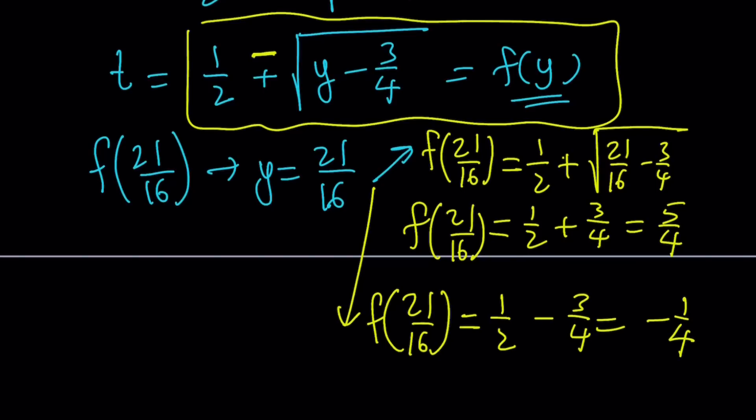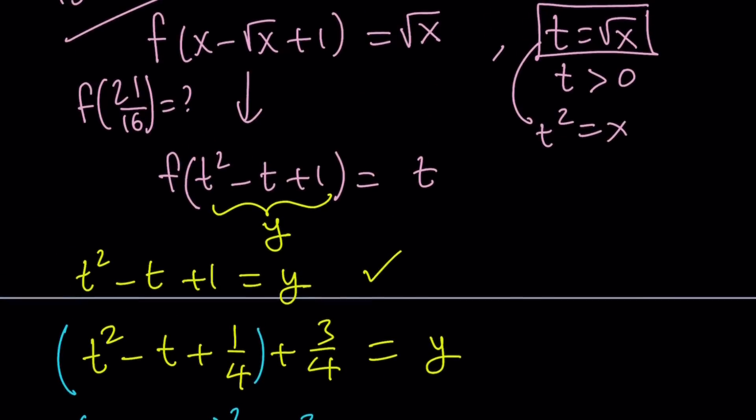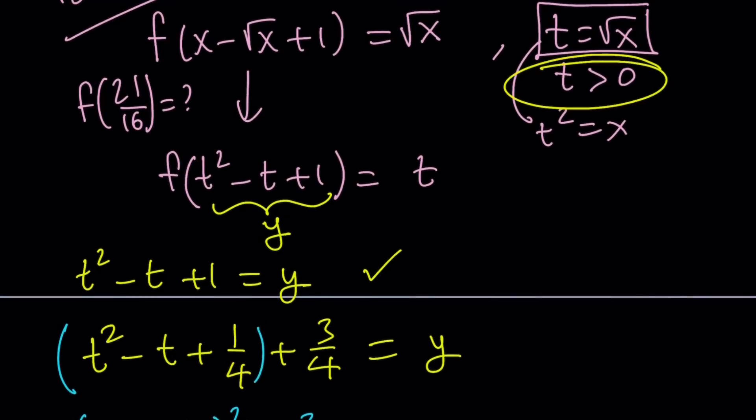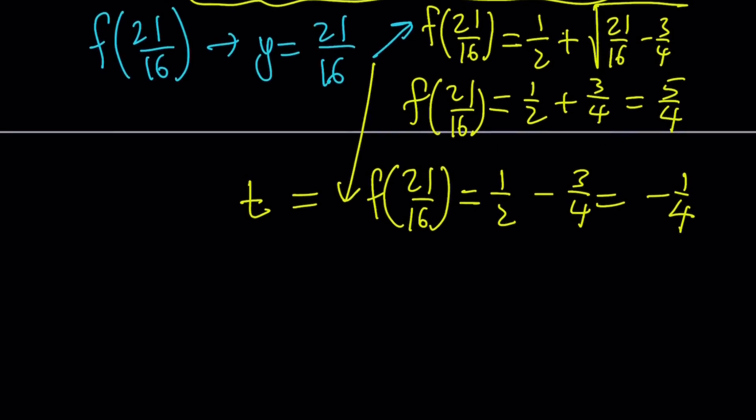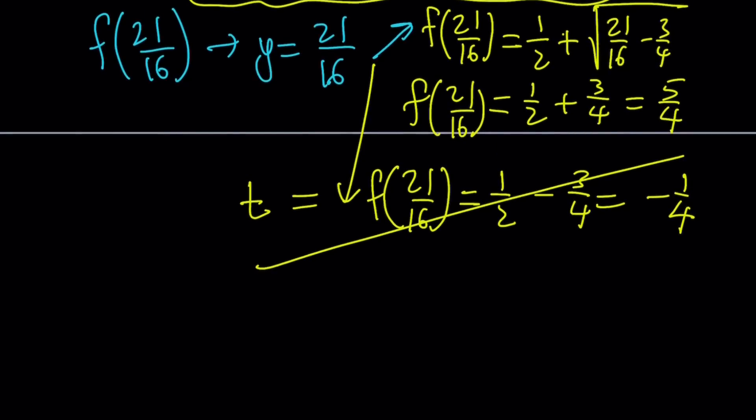But remember, this f of y thing is equal to t, right? And what did we say about t before? We said that t needs to be positive. So this is not acceptable. Even though we get two results from the square rooting, this value is not going to be accepted. Make sense?